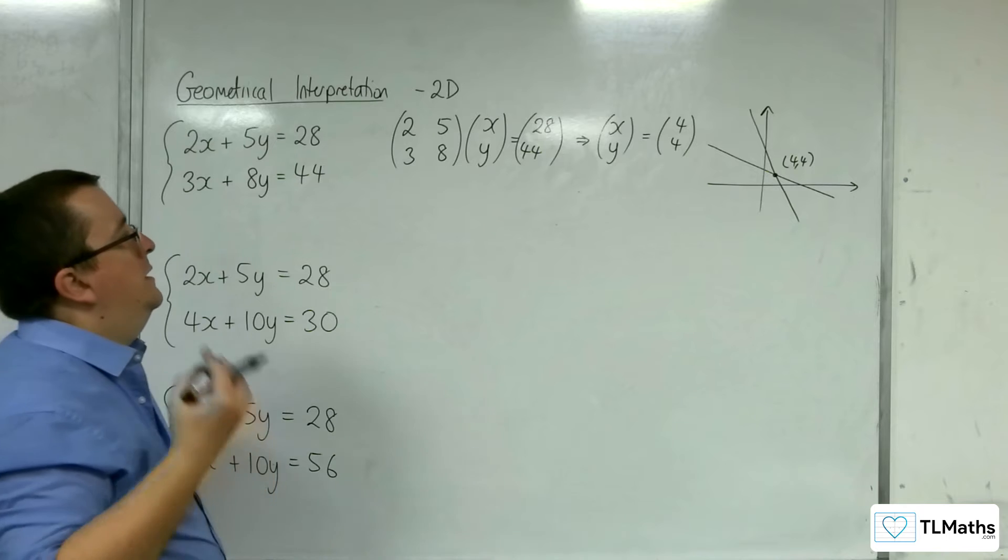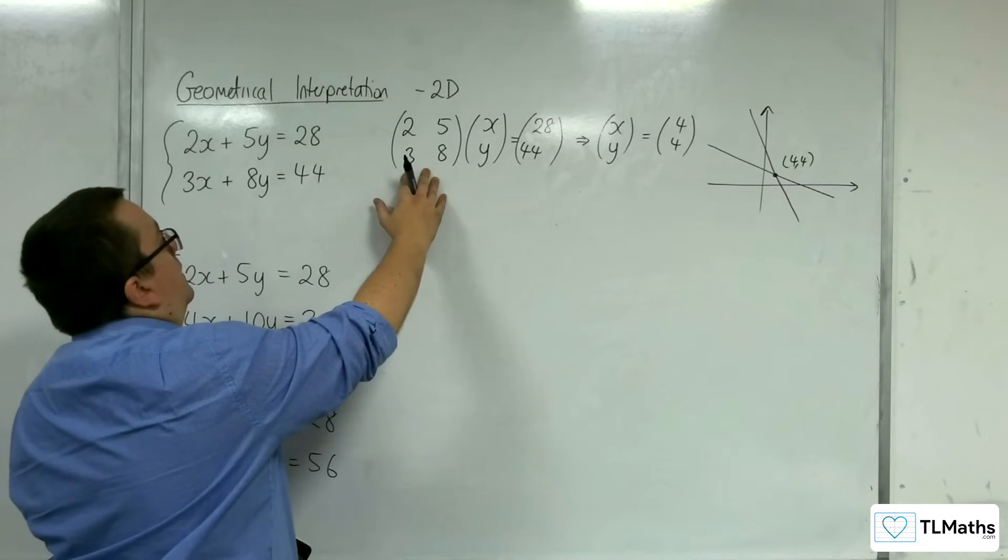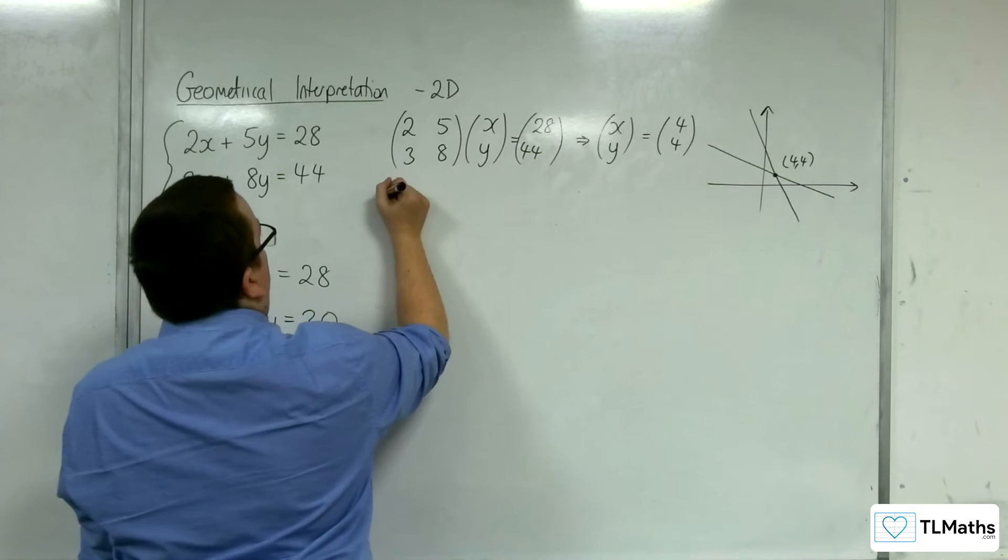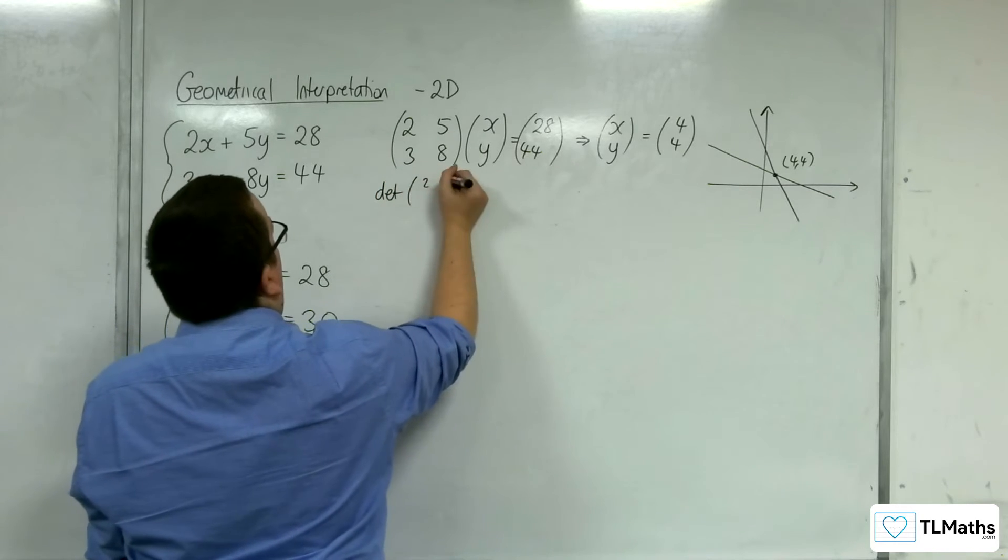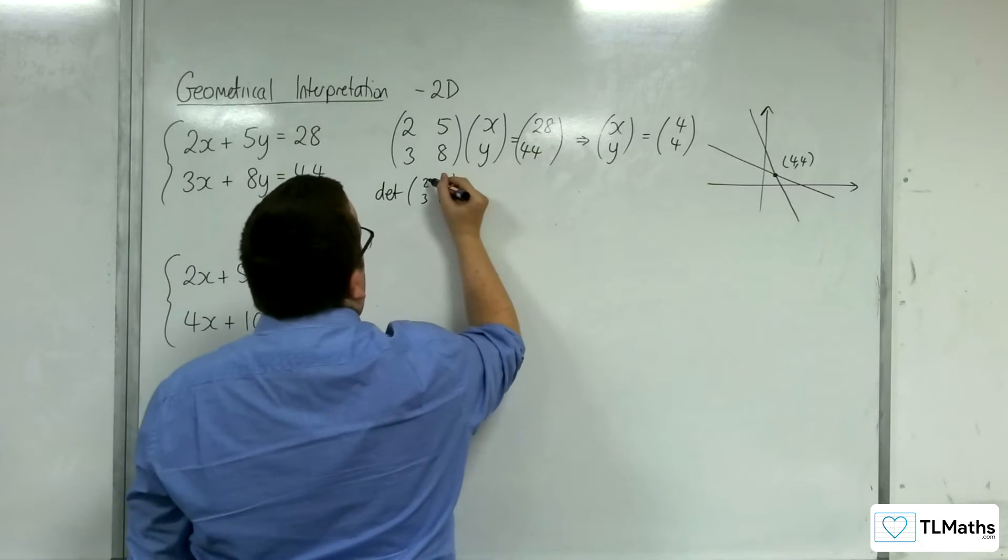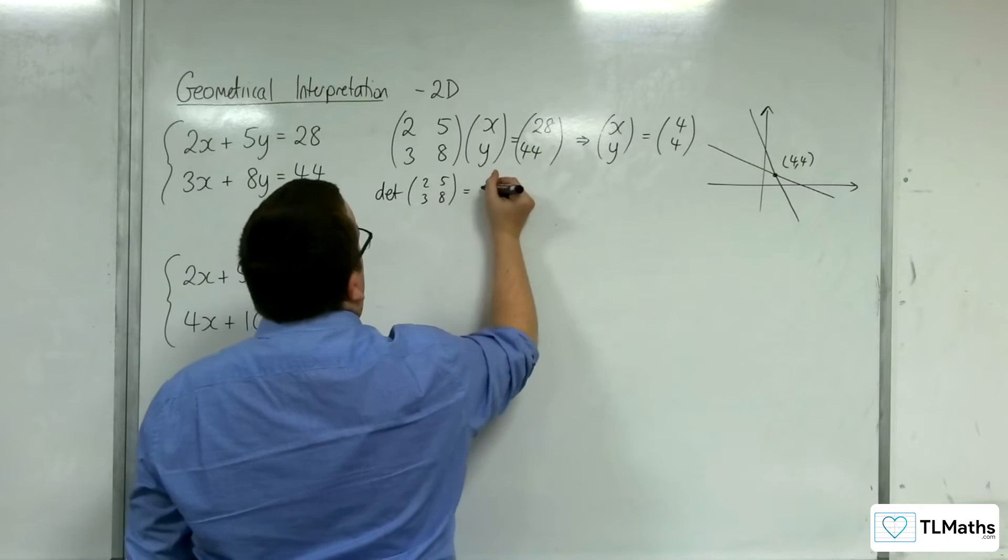Okay. And this is coming from the fact that the matrix that you've got here, its determinant is non-zero. So the determinant of the matrix 2, 5, 3, 8 is equal to 2 times 8, so 16, take away 15.